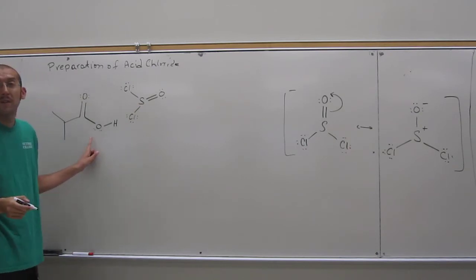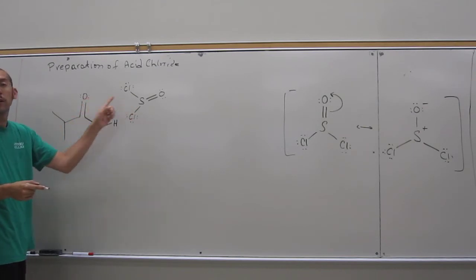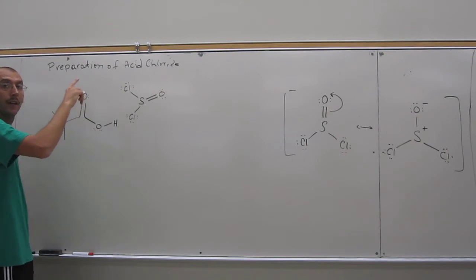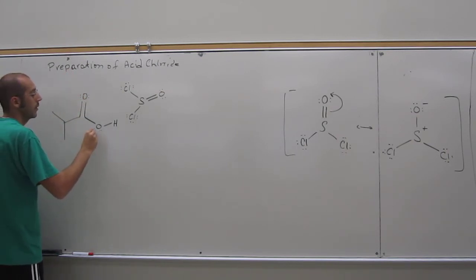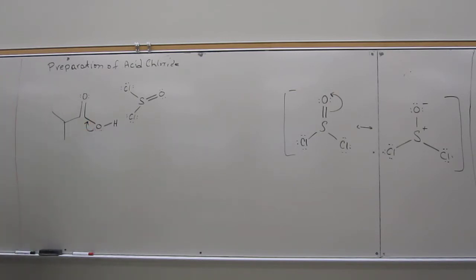So electrons are very attractive to it. So what's going to happen is these electrons here are going to see that and want to attack it, but they need to be instigated to attack it from some other way. So these electrons here are going to come down and make that bond there.